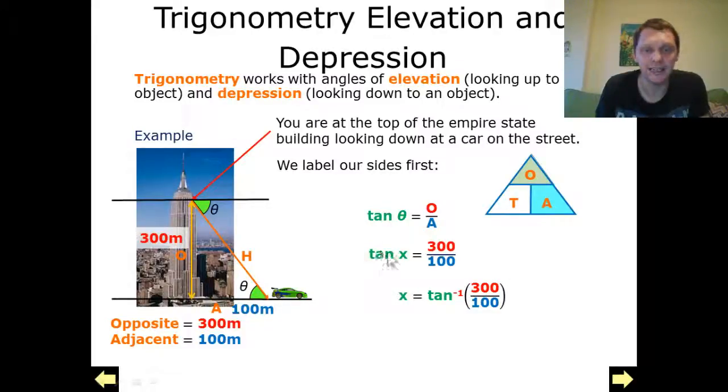Now rearranging this, taking tan from the left-hand side to the right-hand side, it becomes its reciprocal. So x equals tan to the power of negative 1 of 300 over 100. That gives me 71.57 degrees to two decimal places.